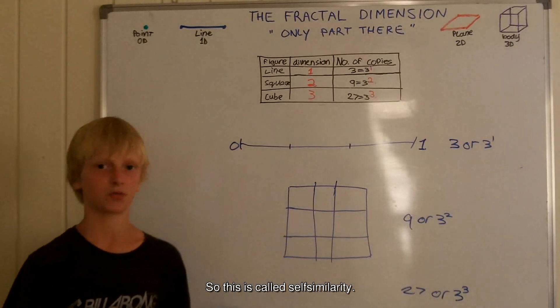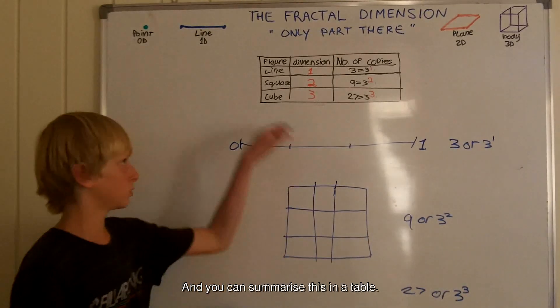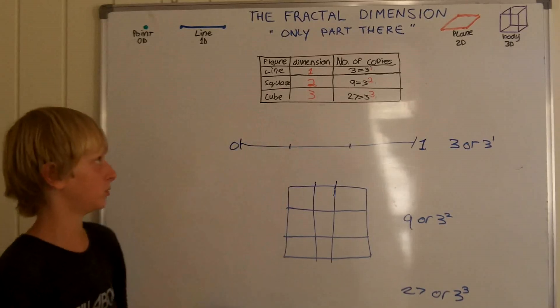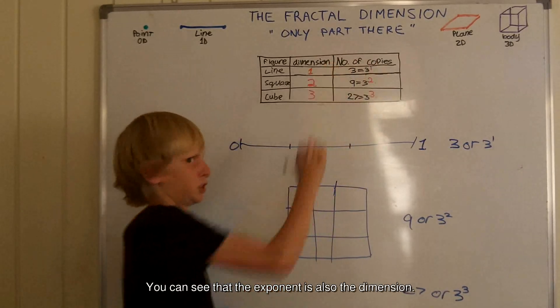So this is called self-similarity. And you can summarize this in a table. You can see that the exponent is also the dimension.